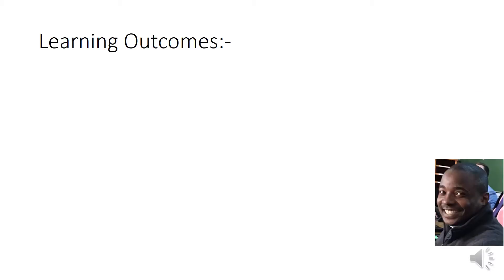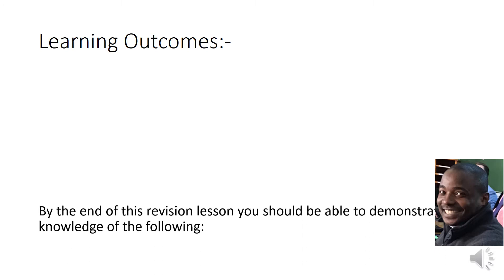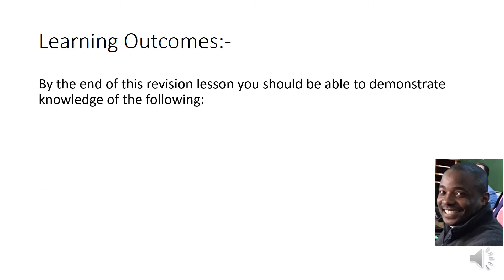The objectives of this lesson: by the end of this revision lesson you should be able to demonstrate knowledge of the following. Number one, you should be able to show understanding of an algebraic expression — the parts of an algebraic expression: variable, term, constant, parts of a term, and polynomials. These are the definitions that we will be using and you need to know when and how to use them properly.